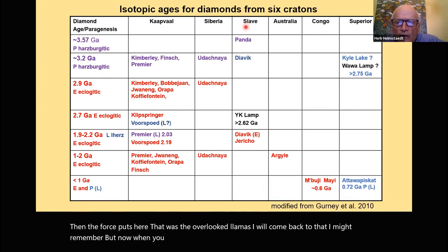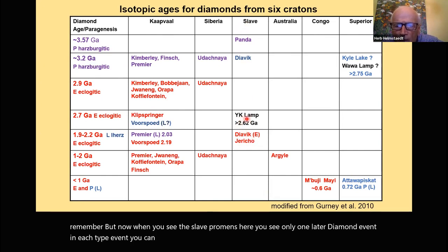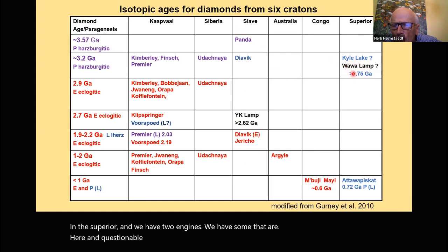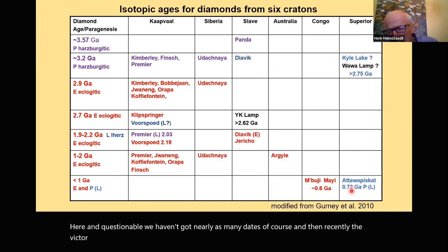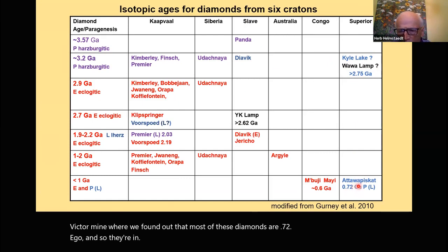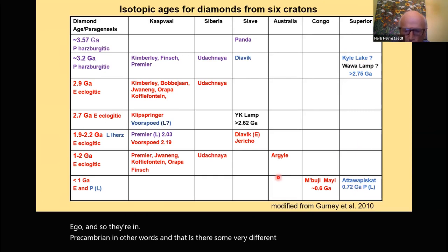When you see the Slave Province, there is only one later diamond event — an E-type event — and lamprophyres with diamonds. In the Superior, we have two. Recently, the Victor mine's diamonds were found to be 0.72 Ga, so late Precambrian. There are very different processes going on. We also have detrital diamonds: 2.96 billion years old in the Slave, and the famous Witwatersrand diamonds at 2.85 billion years old.